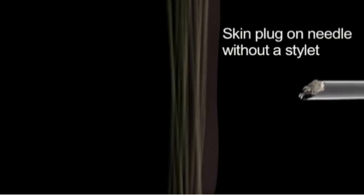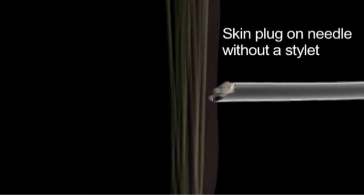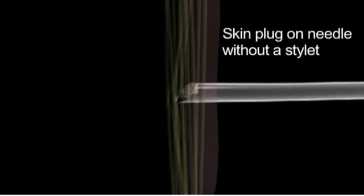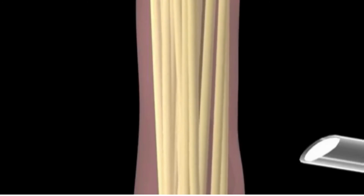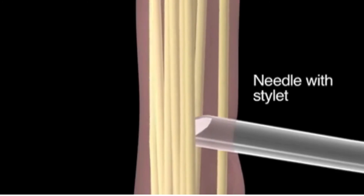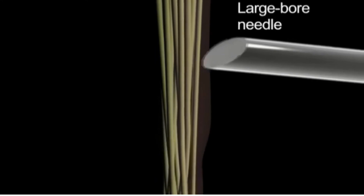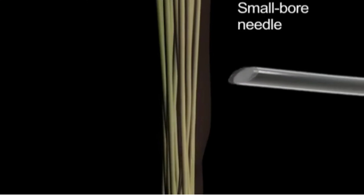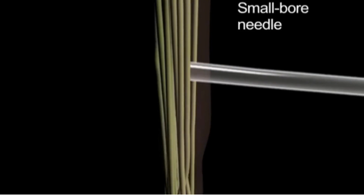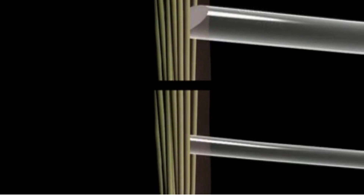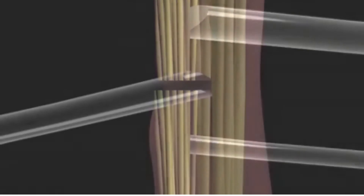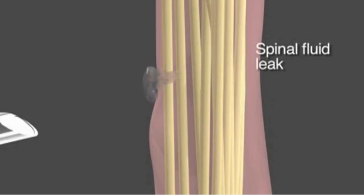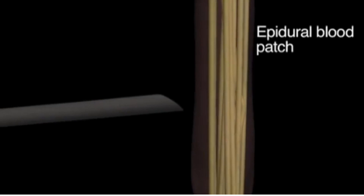A subarachnoid epidermal cyst occurs when skin tissue is introduced into the subarachnoid space; standard use of a needle with a stylet will avoid this complication. Leakage of spinal fluid can occur at the puncture site — a large bore spinal needle is more likely than a smaller bore needle to produce a leak, so the latter should be used whenever possible. In the case of persistent leakage, an anesthesiologist should be consulted to determine whether a blood patch is needed to occlude the leak.